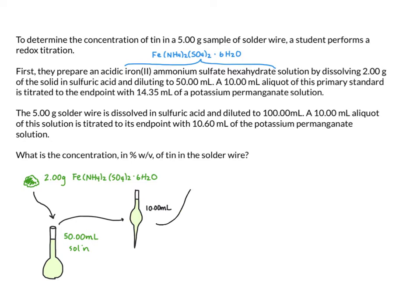We're going to take that 10 mL aliquot and put it into an Erlenmeyer flask. That's going to be titrated with our potassium permanganate, and we're told that to reach the endpoint of our potassium permanganate titration we required 14.35 milliliters. So we have our potassium permanganate in our burette and we are adding 14.35 milliliters drop by drop into our flask until we reach the endpoint — in this case the endpoint is likely going to be a pale pink. That entire process allows us to determine the concentration of the permanganate.